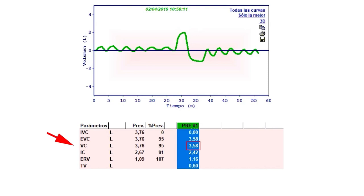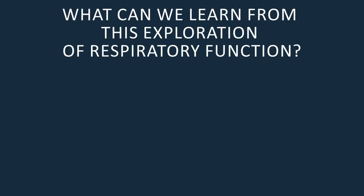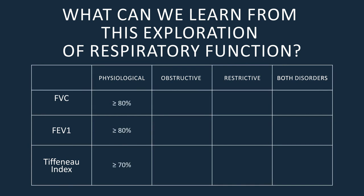What can we learn from this exploration of respiratory function? With the obtained percentages of vital capacity, FEV1, and the Tiffeneau index, we can obtain an orientation towards a diagnosis of an obstructive or restrictive disorder. In the pure obstructive disorder, the vital capacity is not affected but the FEV1 is less than 80 percent, making the Tiffeneau index also low.